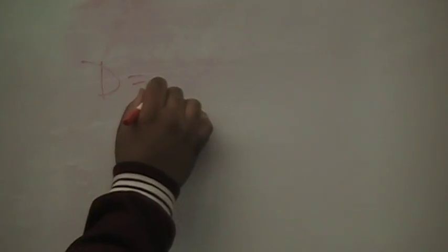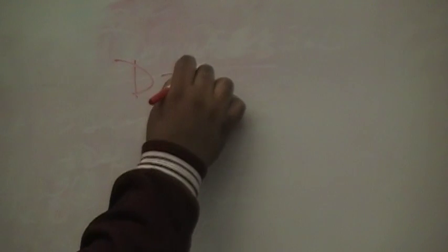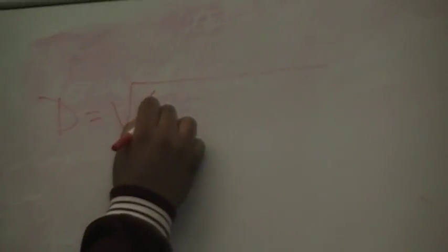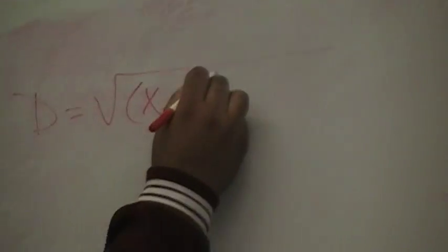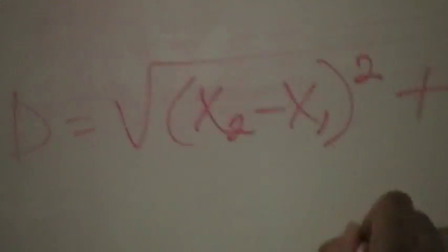What's the distance formula? You just had it. Square root of... X2 squared... plus Y2.